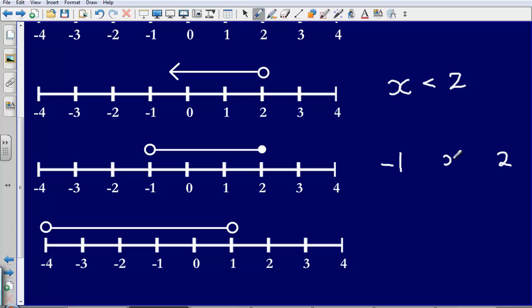So what we can say is that x is in between negative 1 and 2. Now, could it be, could our value of x, the number that we don't know, could it be equal to minus 1 as well? No, it couldn't because it is hollow. So we would say that x is greater than minus 1 but it is less than or equal to 2.